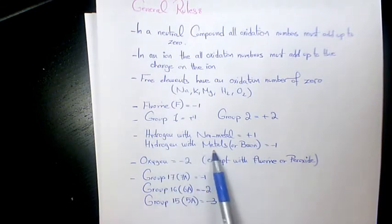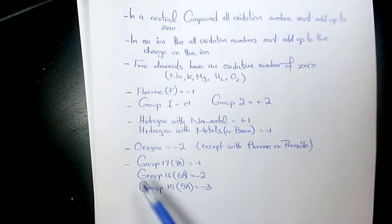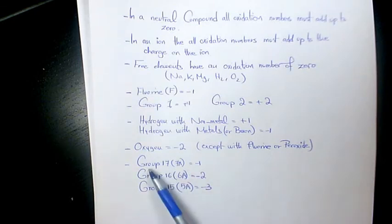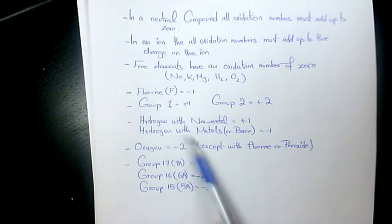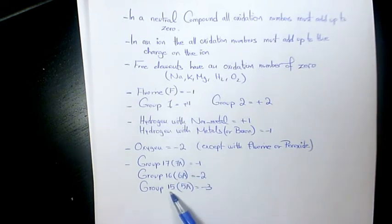Hydrogen with metals and boron is negative one. Oxygen is negative two, except with peroxide and fluorine where it's negative one. Group 17 (or 7A) halogens are negative one. Group 16 (or 6A) is negative two like oxygen. Group 15 (or 5A) is negative three.